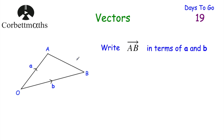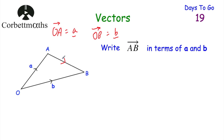Let's look at one last question. We have a diagram where vector OA equals little a and vector OB equals little b. Can you write the vector AB in terms of a and b? To get from A to B, we go from A to O first — that's the opposite direction, so minus a — and then from O to B, which is plus b. So the vector AB equals minus a plus b. Well done if you got that.